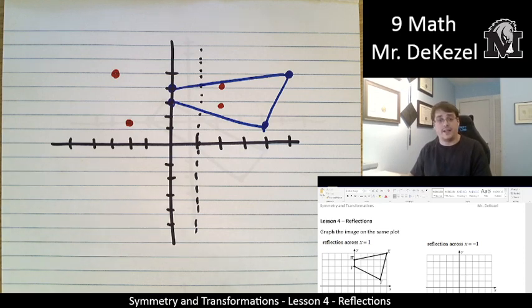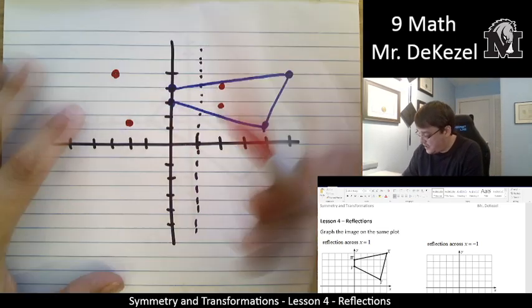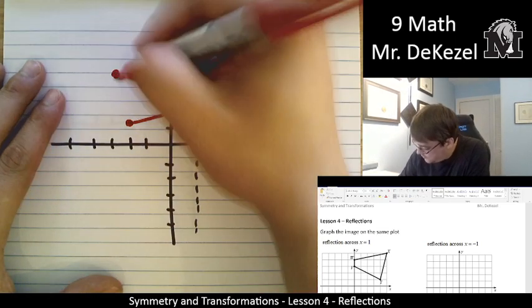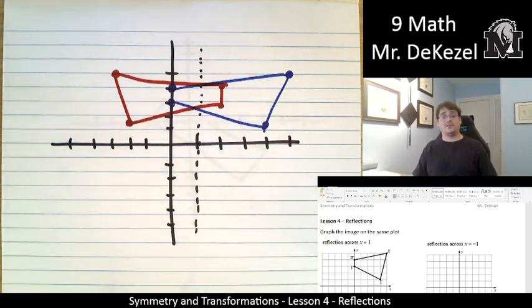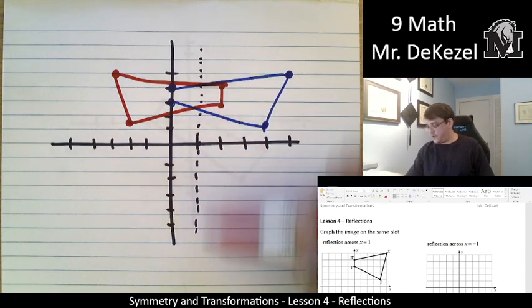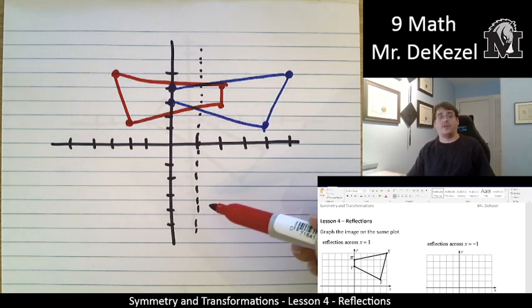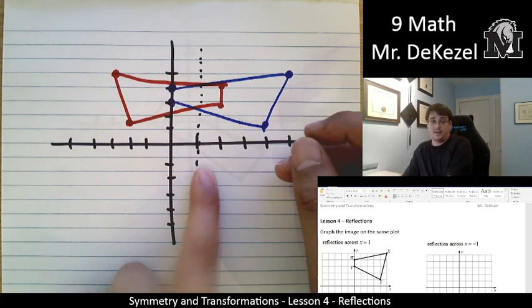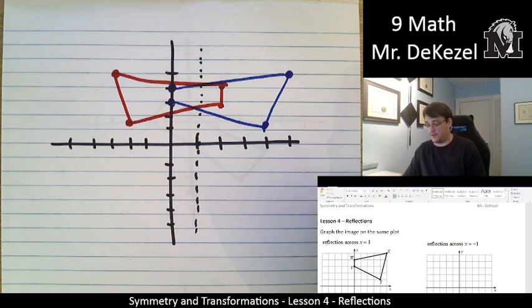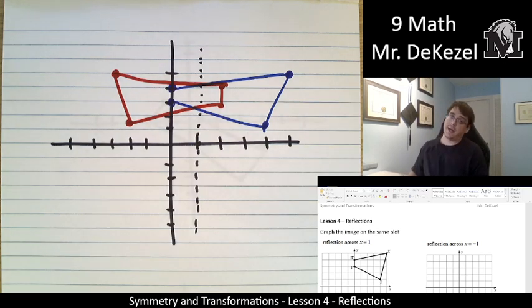So we're going to go ahead and connect these, and we should see the same shape just flipped over. As you can see, if my drawing was better, it would be flipped over this line right here. Not flipped over this dark line, but flipped over this dotted line. If I was a better artist, it would be nicer. But we work with what we have.